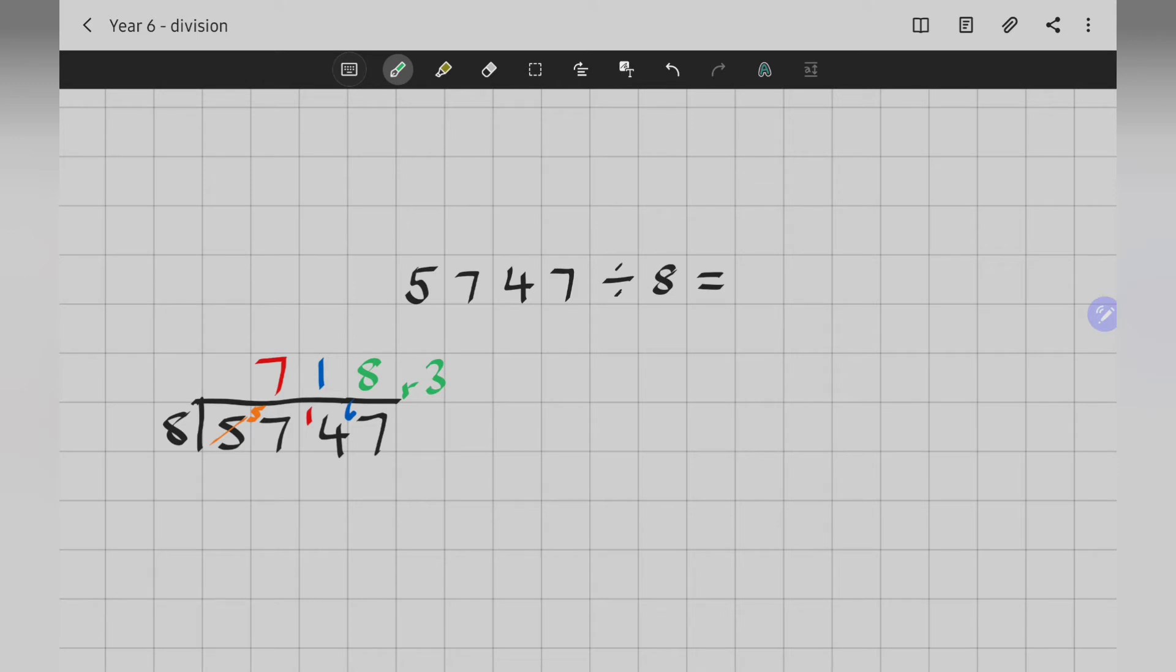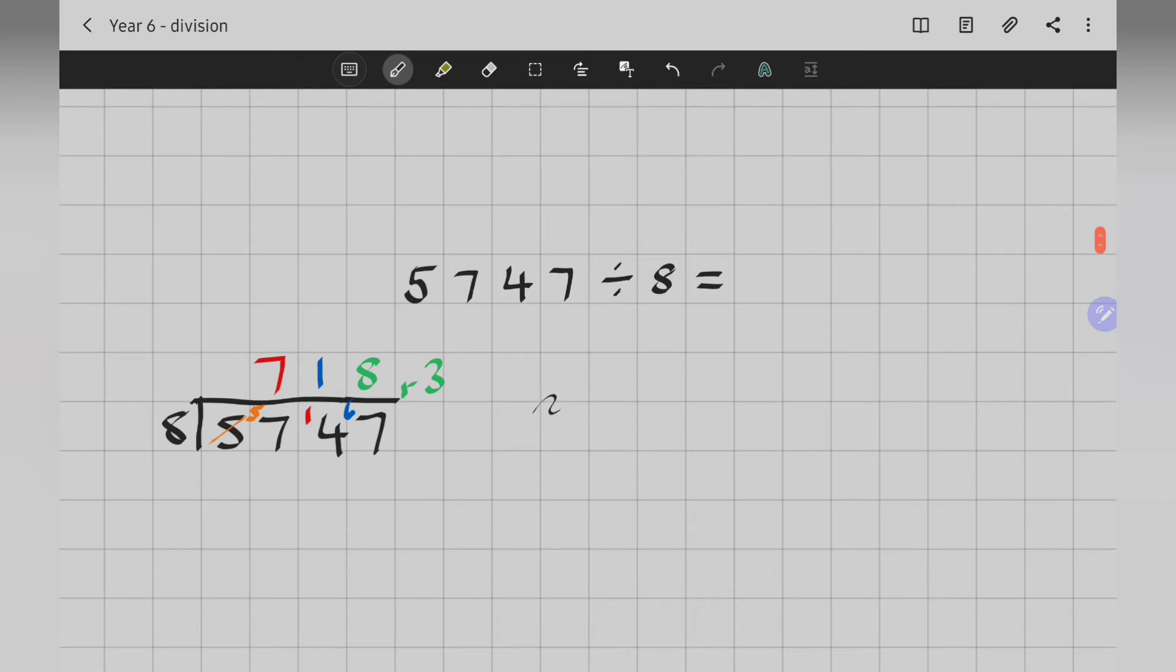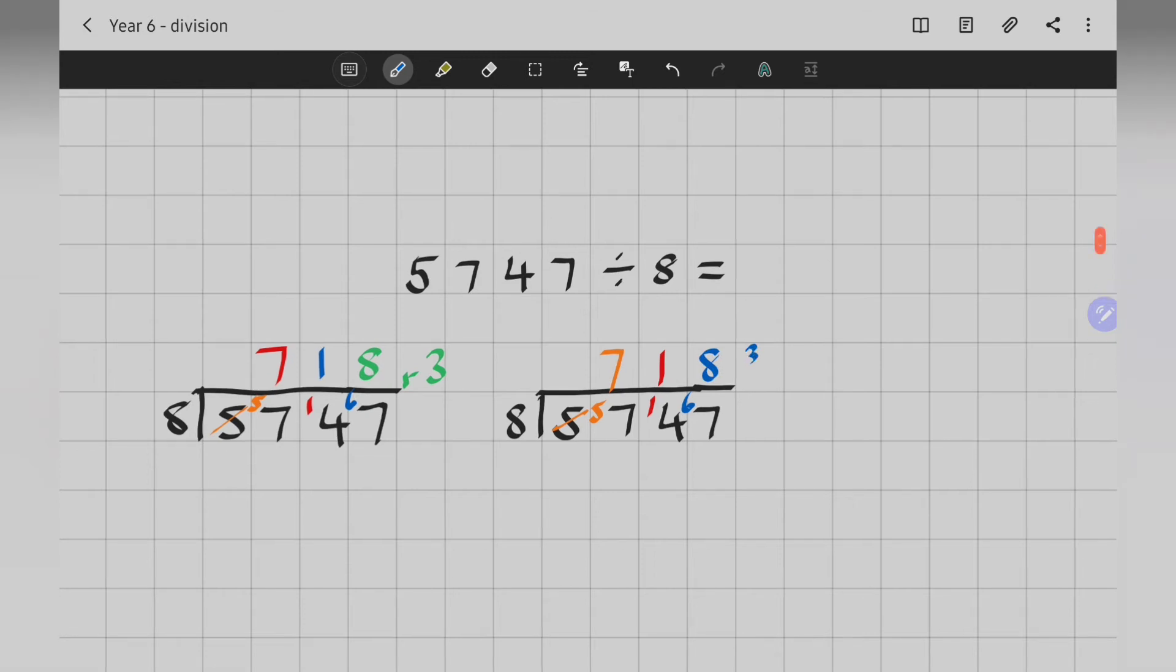Let's do that again. But let's do it as a fraction this time. So, I'm dividing by 8. 5,747. It didn't go into 5. So, we passed it on. 8 into 57. Well, that went 7 times with 1 left over. It went into 40 once with 6 left over. And then into 67. 8 times with 3 left over. Or 3 eighths left over.